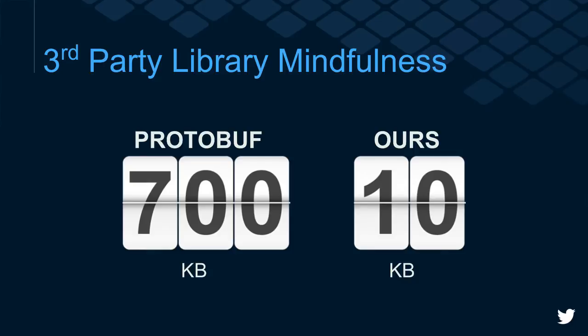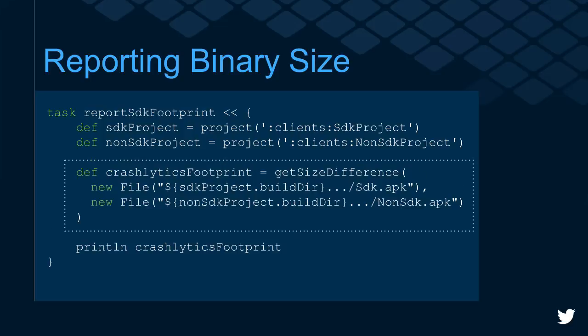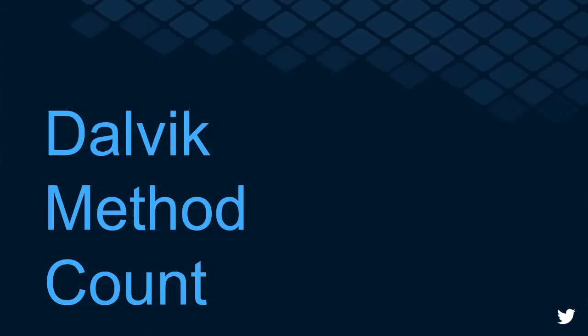As SDK developers, we want to make our SDK as lightweight as possible. We have Gradle tasks that report the binary size, and we run these for each build. Importantly, we build two applications — one with the SDK and one without it — which gives us the real impact on the size of an application, not just the artifact size. We automate this so we can see the trend of the size and tackle problems sooner rather than later. Automate all the things.